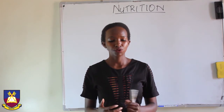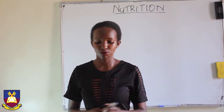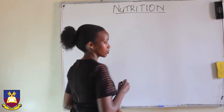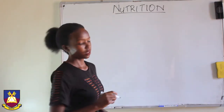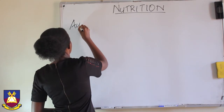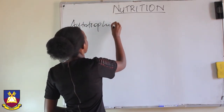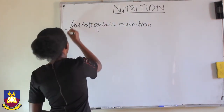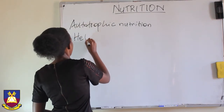Now, there are two major modes of nutrition. The first one being autotrophic nutrition, and the second one being heterotrophic nutrition.